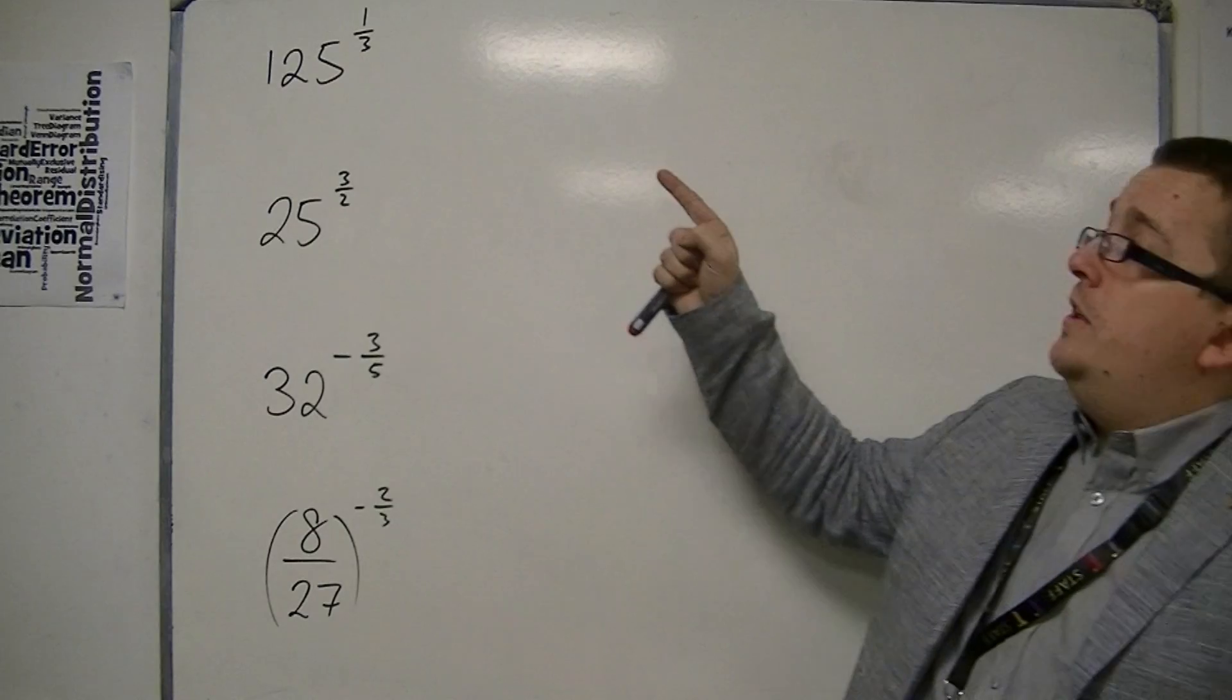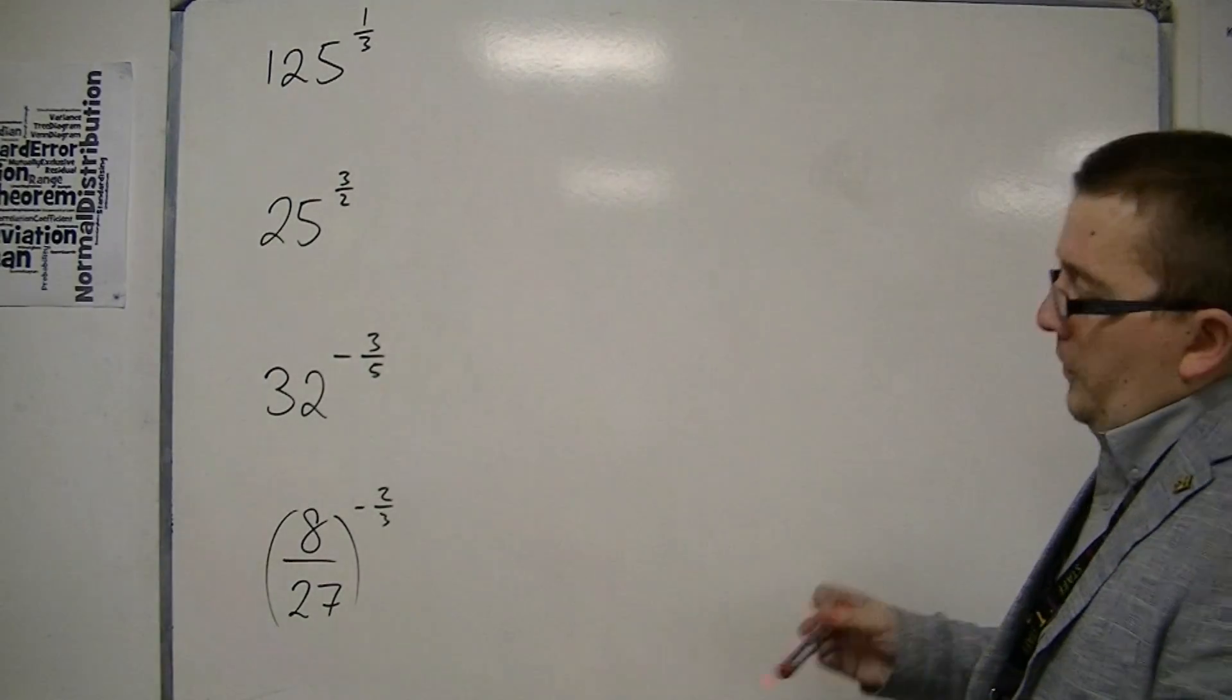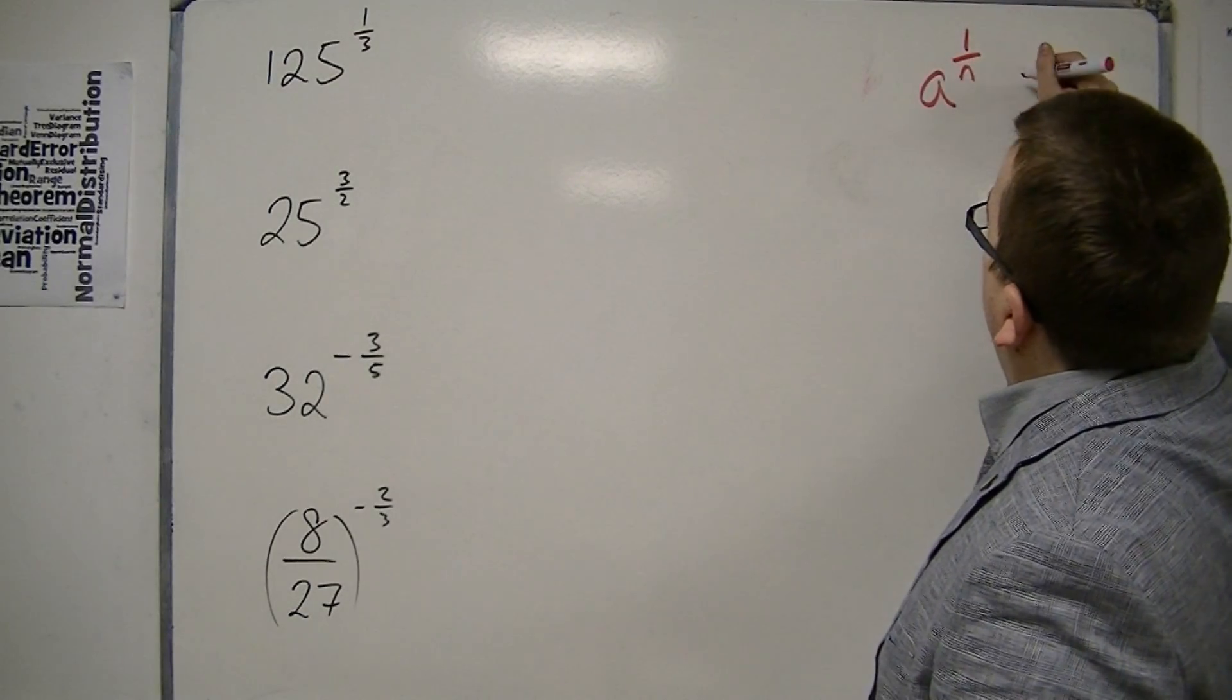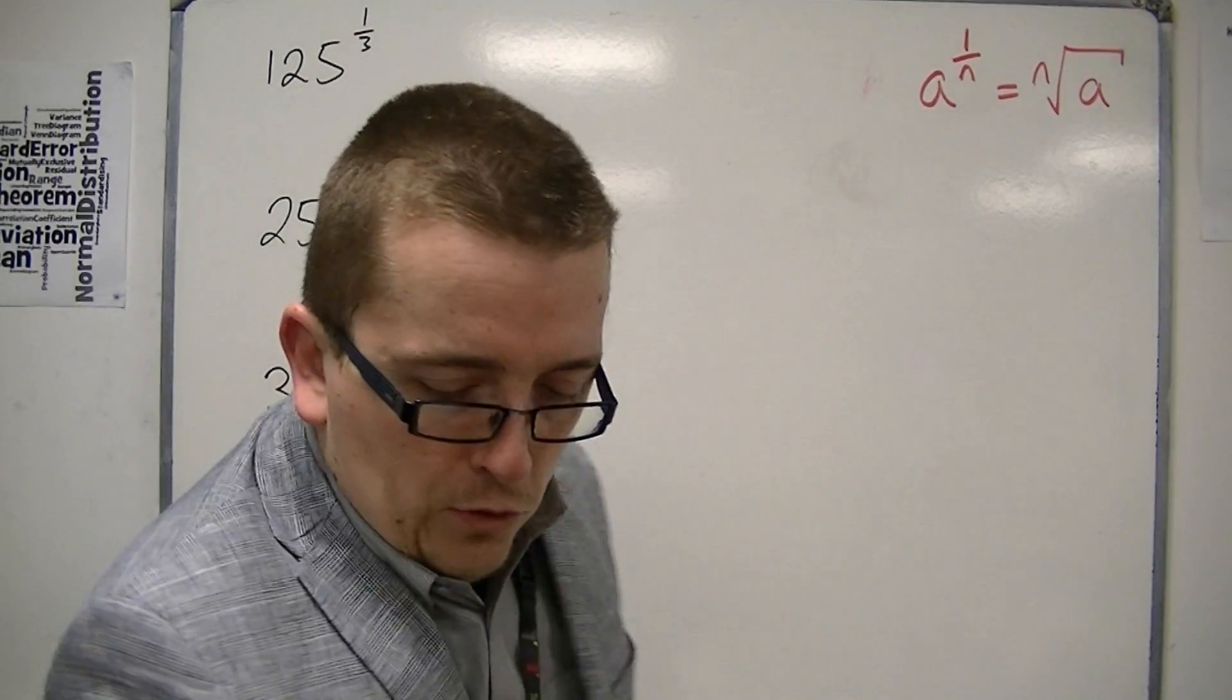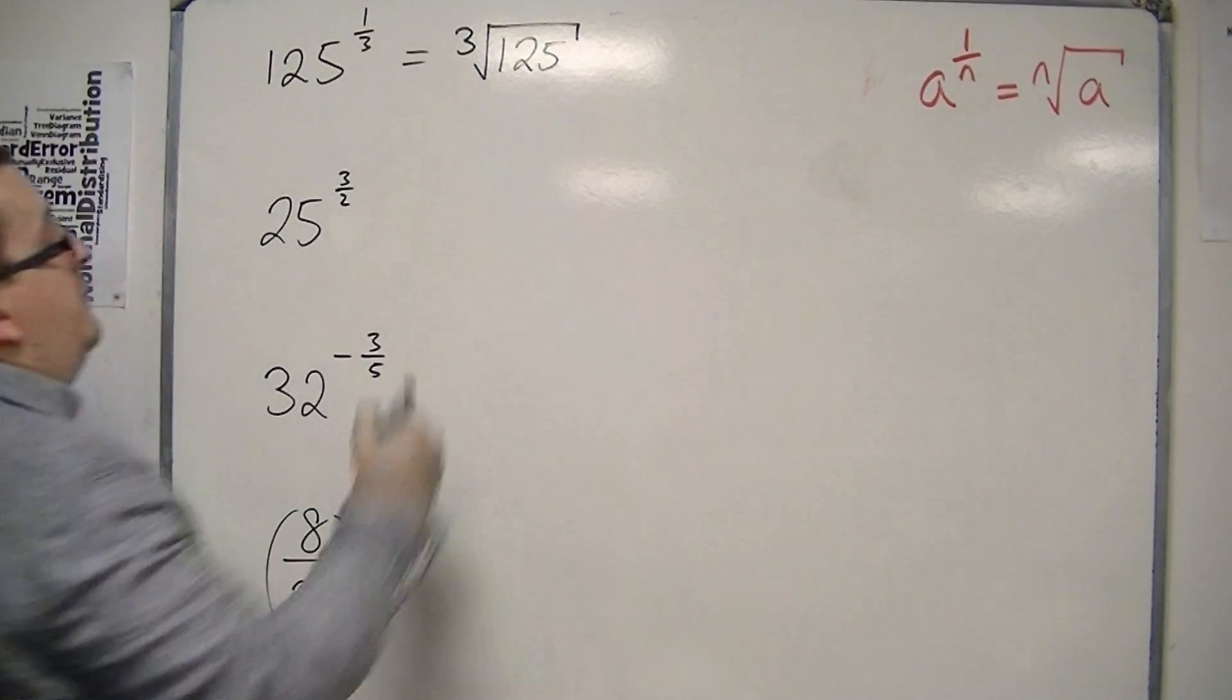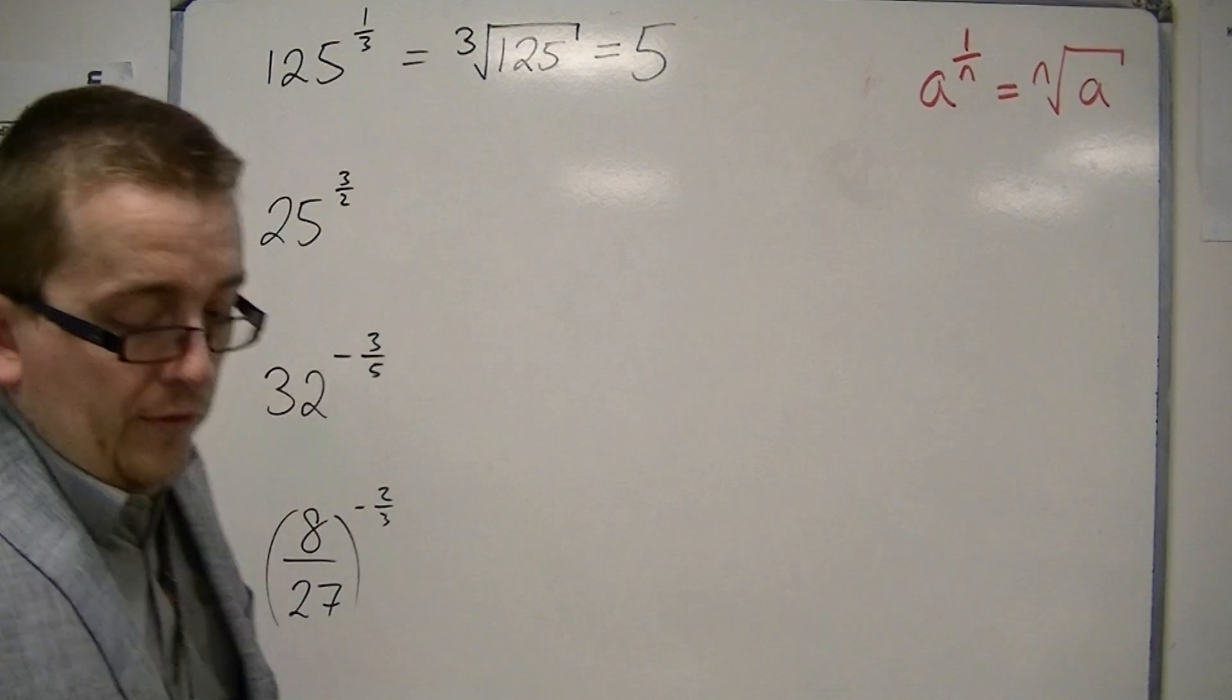We're going to start off with 125 to the power of one third. In the previous videos when we were looking at the laws of indices, if you have the number a to the power of one over n, then this is the nth root of a. So 125 to the one third is the third root of 125, the cube root of 125, which you should know is 5. So that's the first one sorted; one third is a cube root.